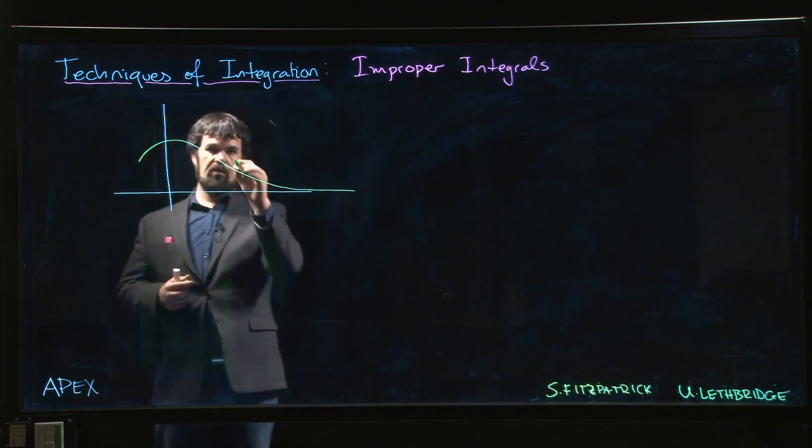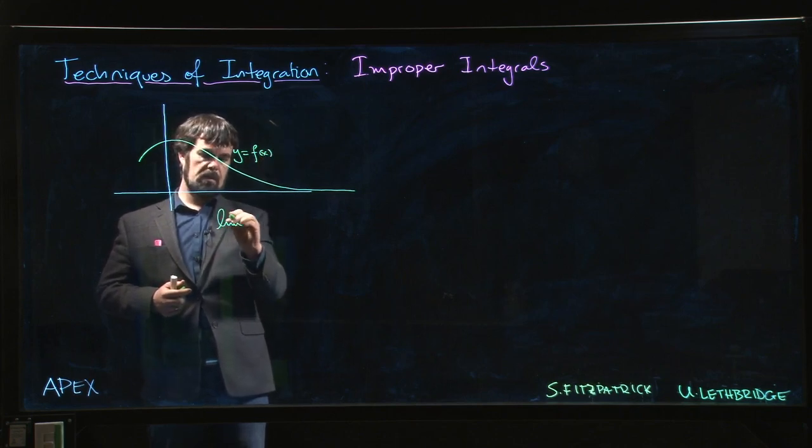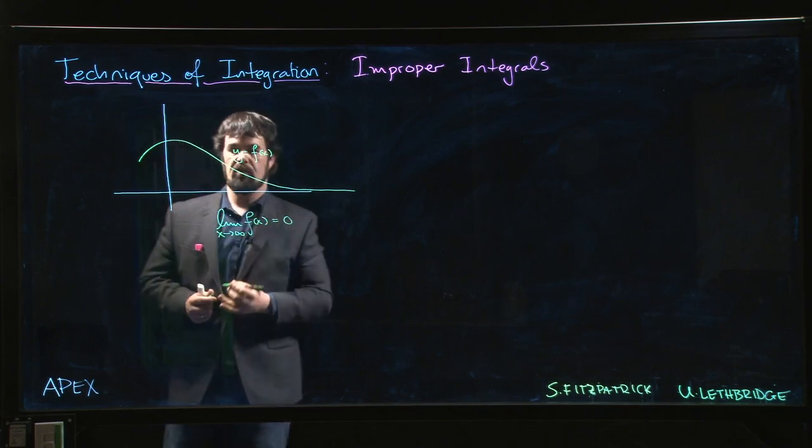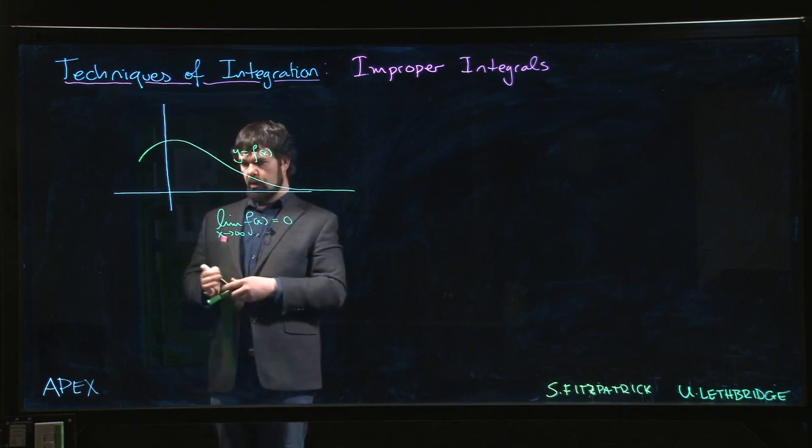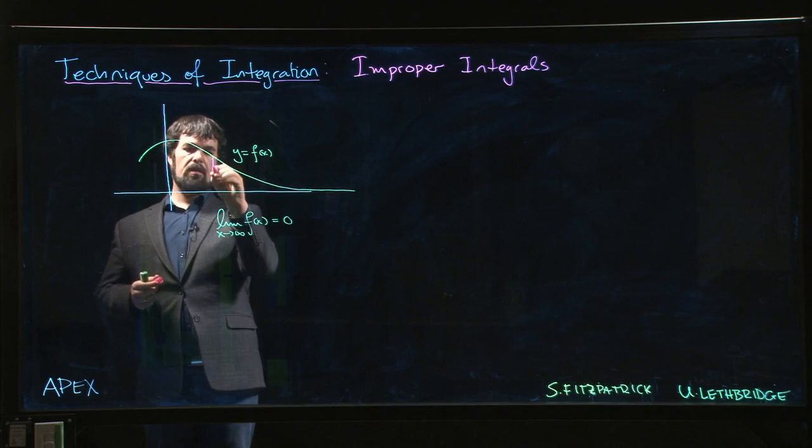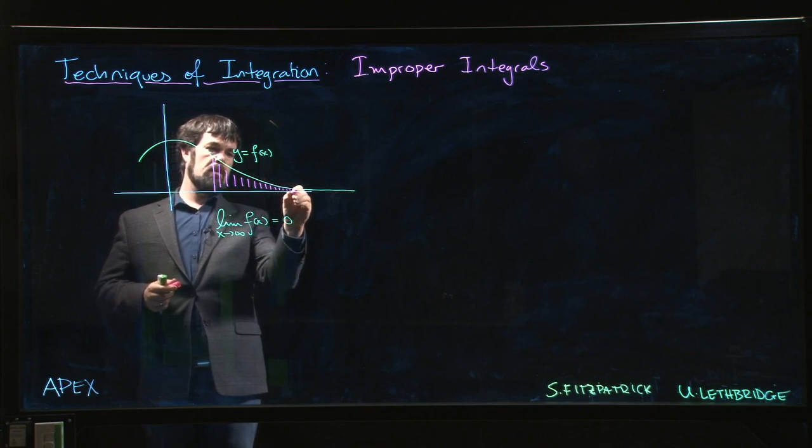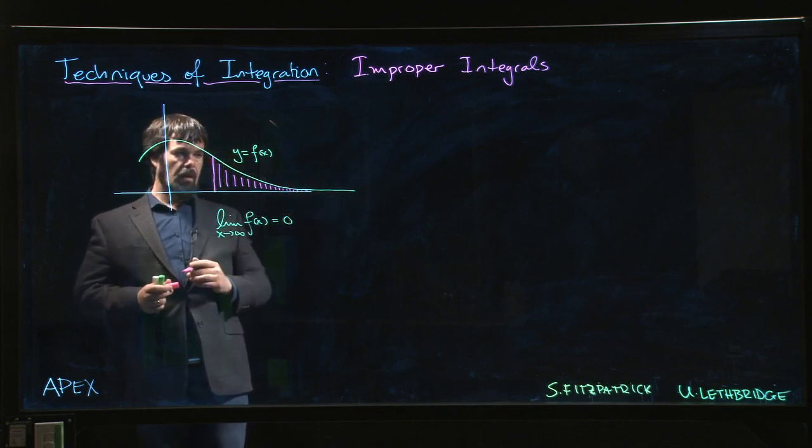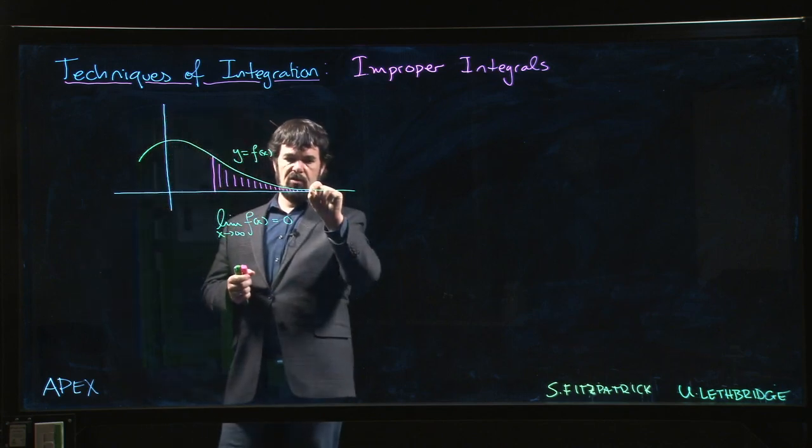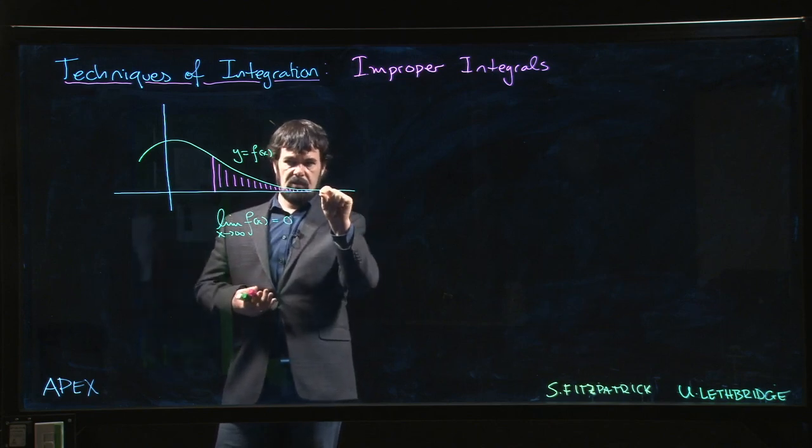It approaches zero. Here's y equals f of x, and we know that the limit as x goes to infinity of f(x) is zero. The question is: could we actually calculate a well-defined area if we calculate the area under the curve and just kept going forever? Does that actually make sense? The contribution that we get as we go further out is getting smaller and smaller because the y value is getting really tiny, so there's less and less area.